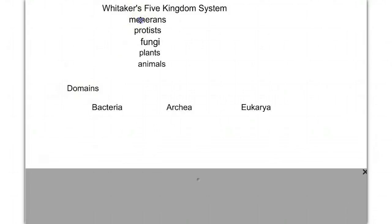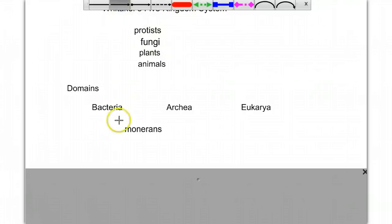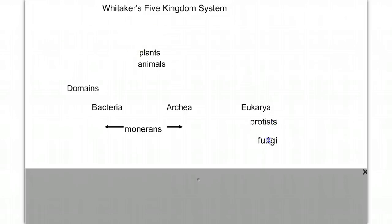The reason for this change is that when looking at the Monerans, or the bacteria, we found a very distinct separation between two different groups of Monerans — so much difference that they probably belonged in their own category. What used to be Monerans is now split among two domains: bacteria and archaea, or archaeobacteria. The remainder of our kingdoms — protist, fungus, plants, and animals — are in the domain Eukarya, those cells with a nucleus.